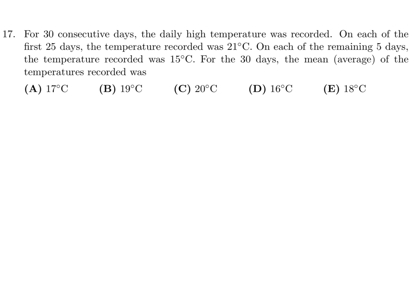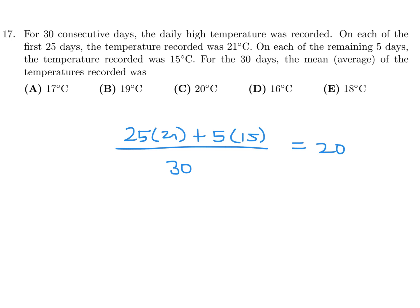For 30 consecutive days the daily high temperature was recorded. On each of the first 25 days the temperature was 21°C, and on each of the remaining five days it was 15°C. The mean is: (25 × 21 + 5 × 15) divided by 30, which gives 20°C. Number 17 is C.